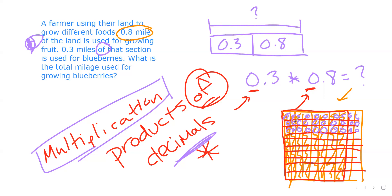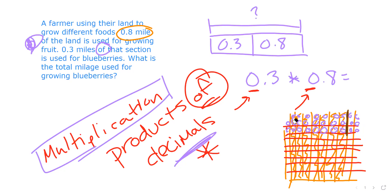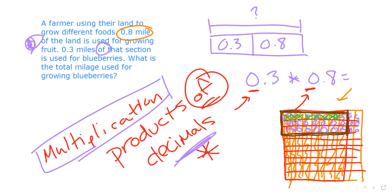But the key point is we're only talking about three tenths of the eight tenths, so we're just looking within that eight tenths section. That overlap area gives us our answer. If we look at what one little square is — it's one hundredth. So counting the overlap squares: one hundredth, two hundredths, three hundredths, four hundredths, five hundredths, six hundredths, seven hundredths, eight hundredths...